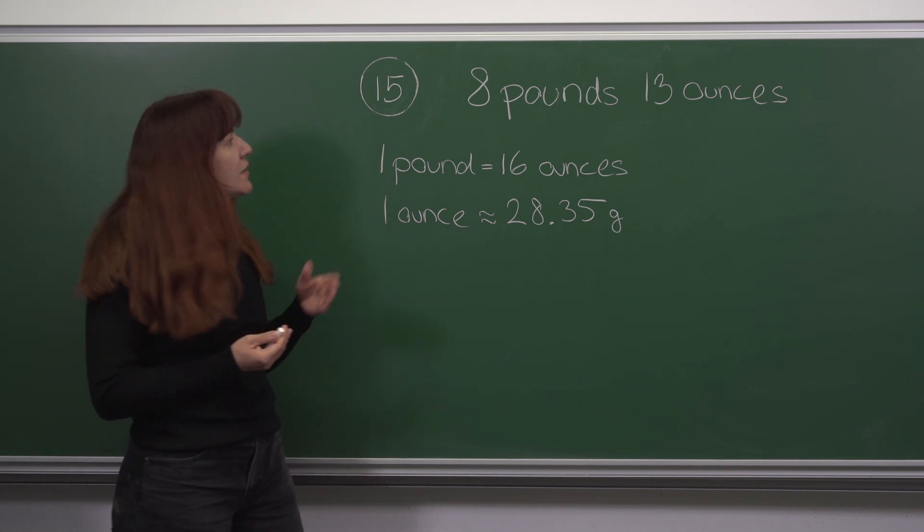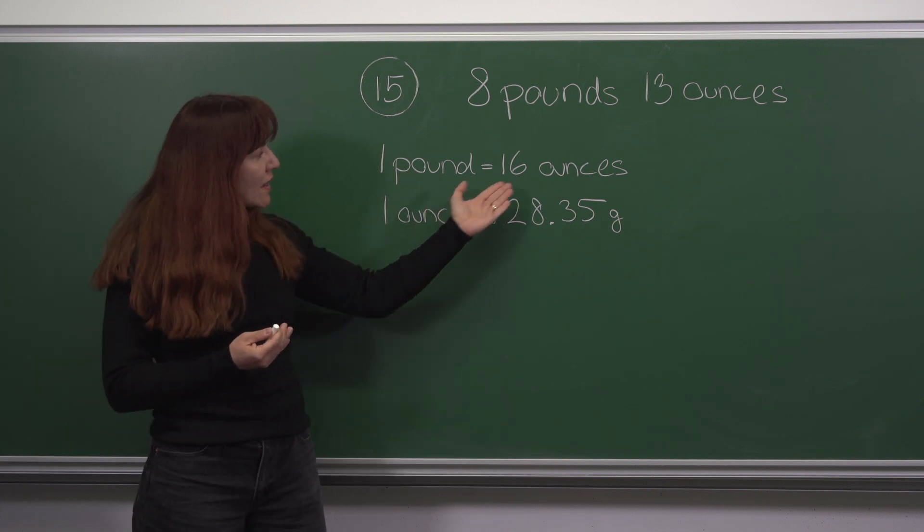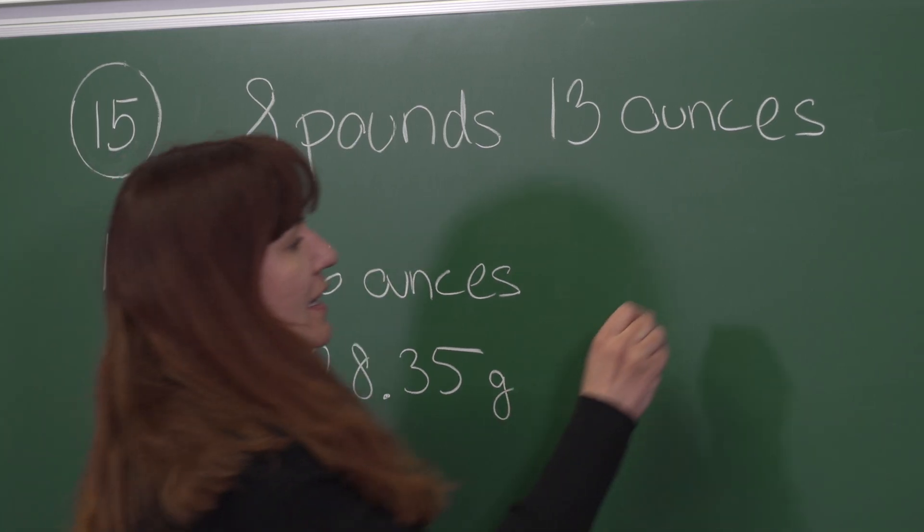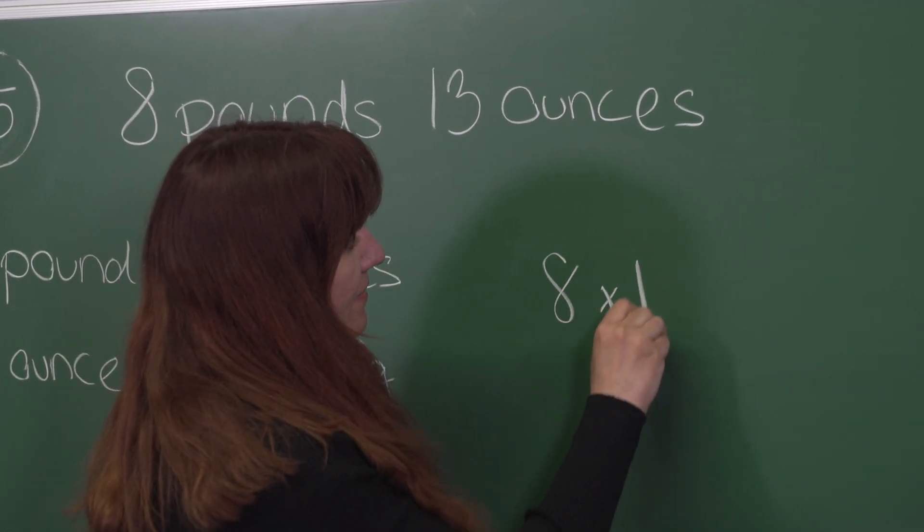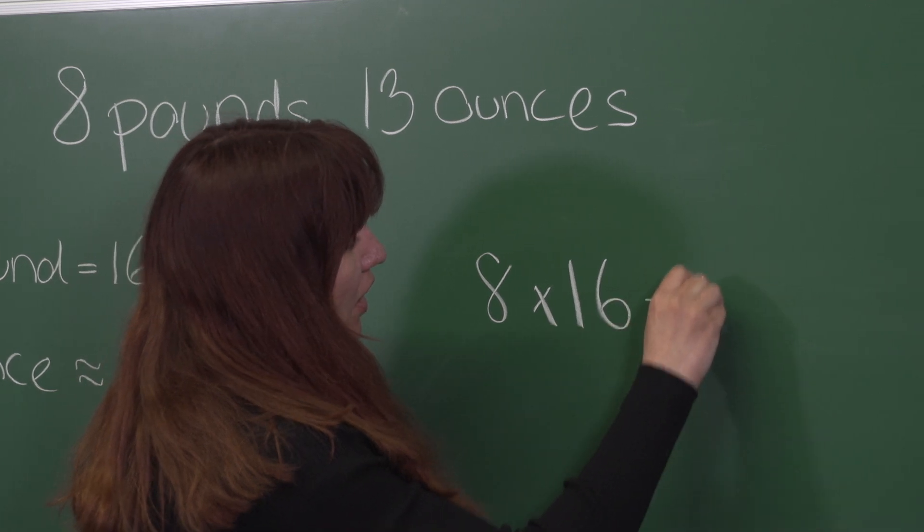To start, it would be useful to change 8 pounds to ounces, so we need to calculate 8 times 16, which is 128.